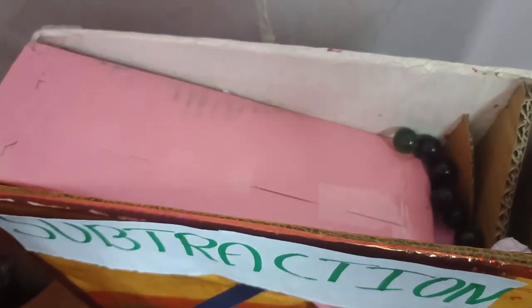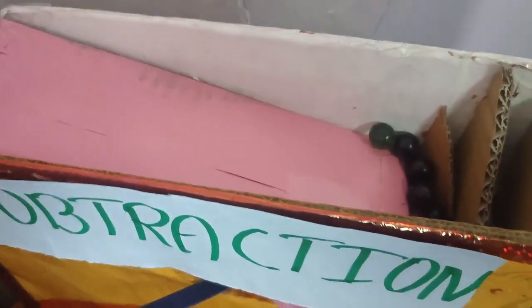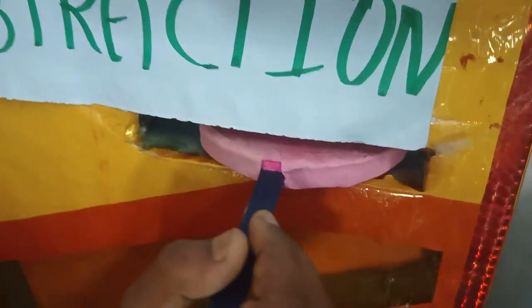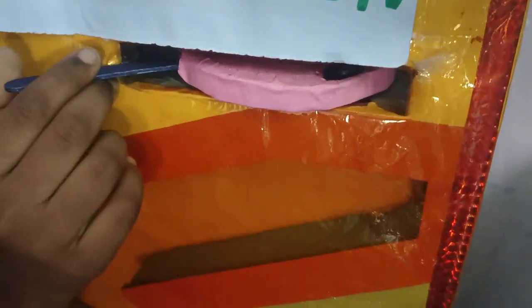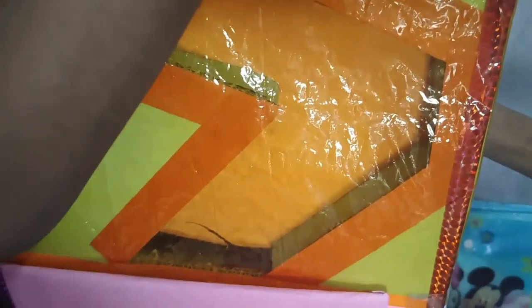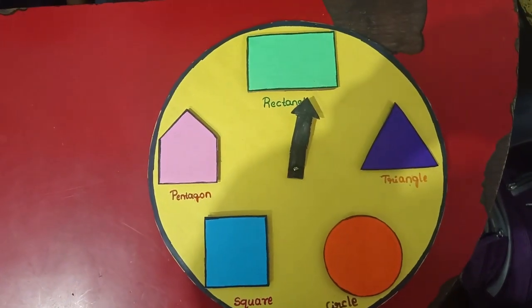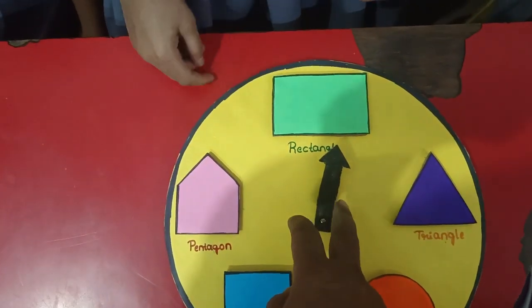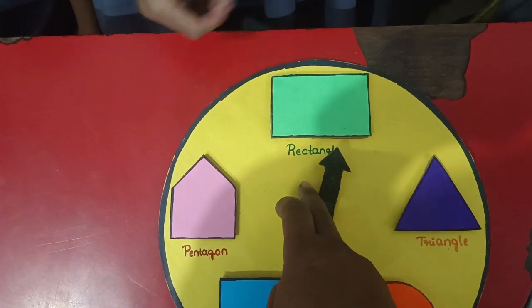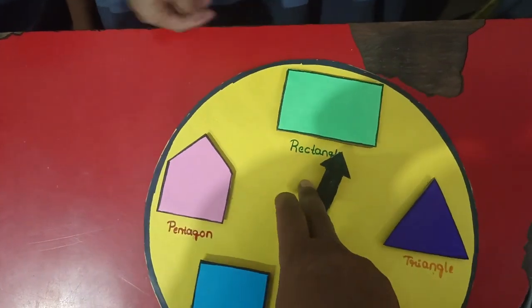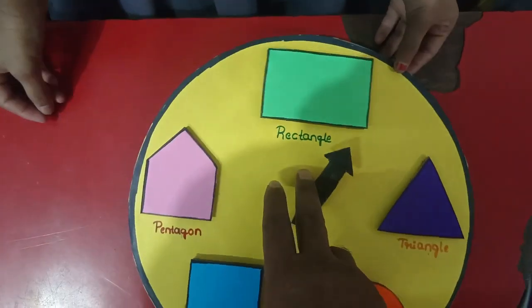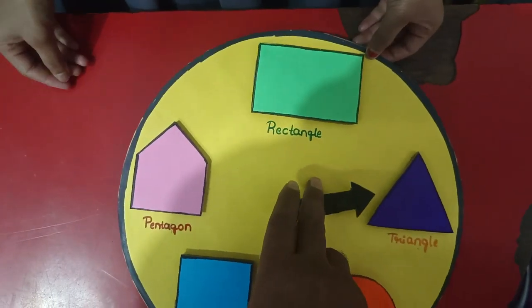A quadrilateral has four sides. Two opposite sides are equal.